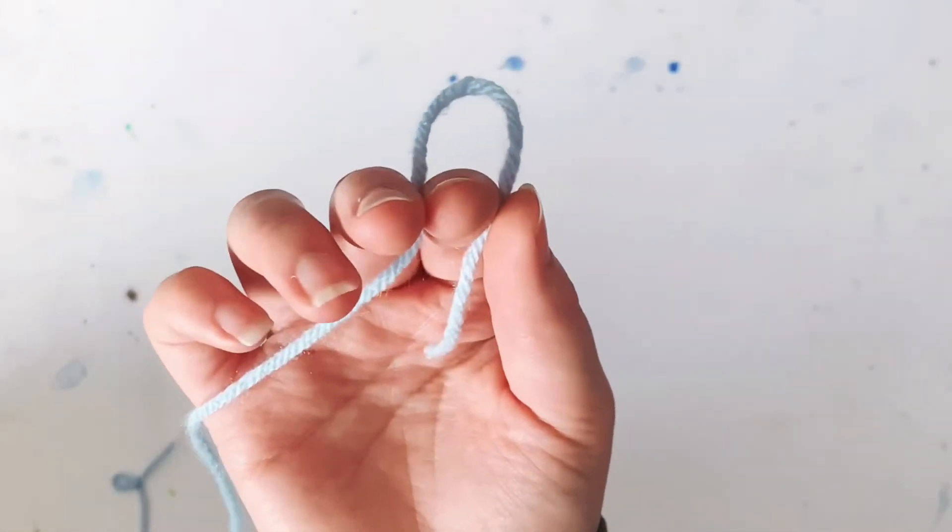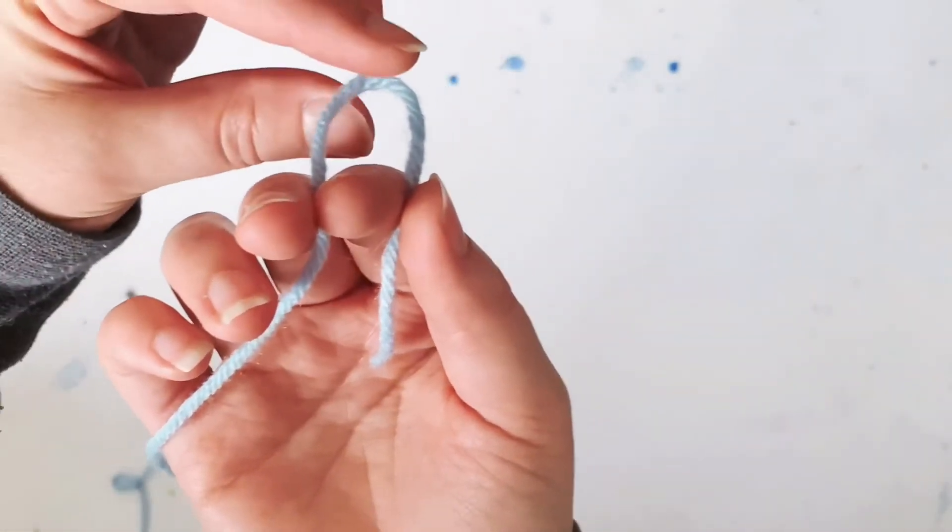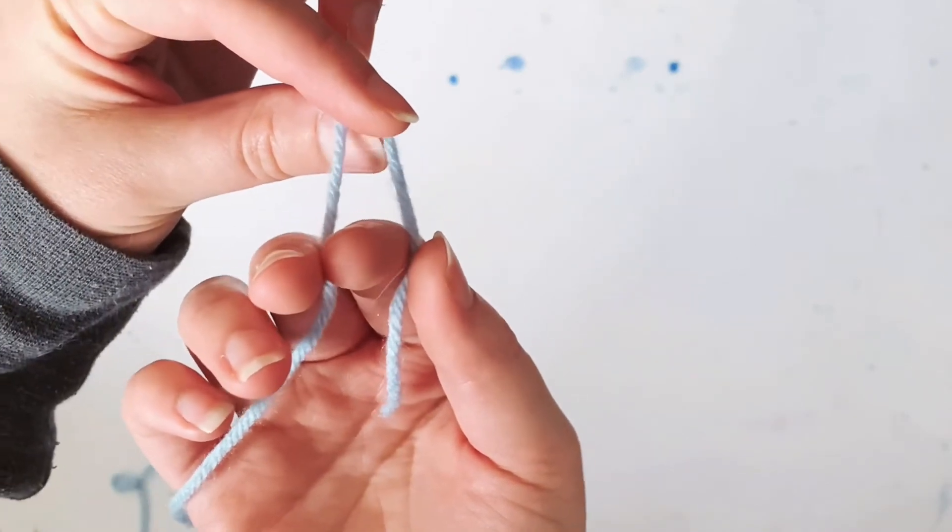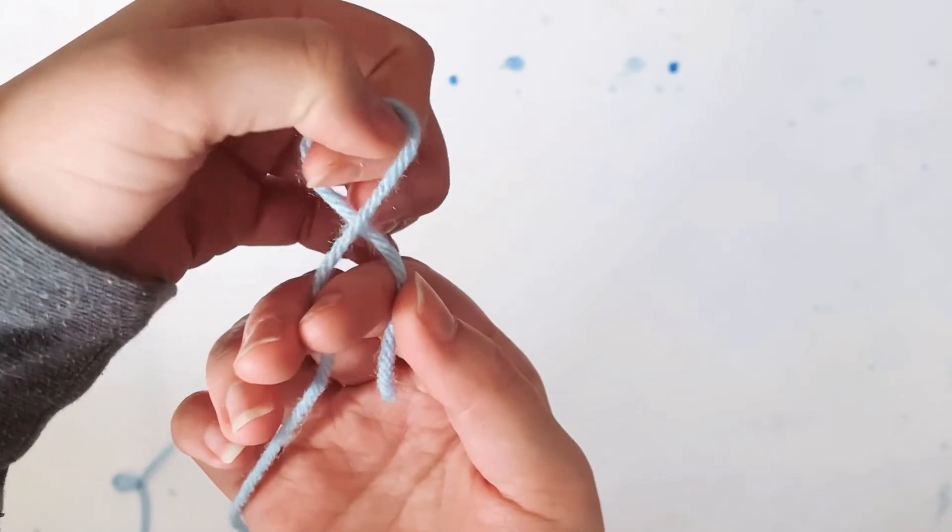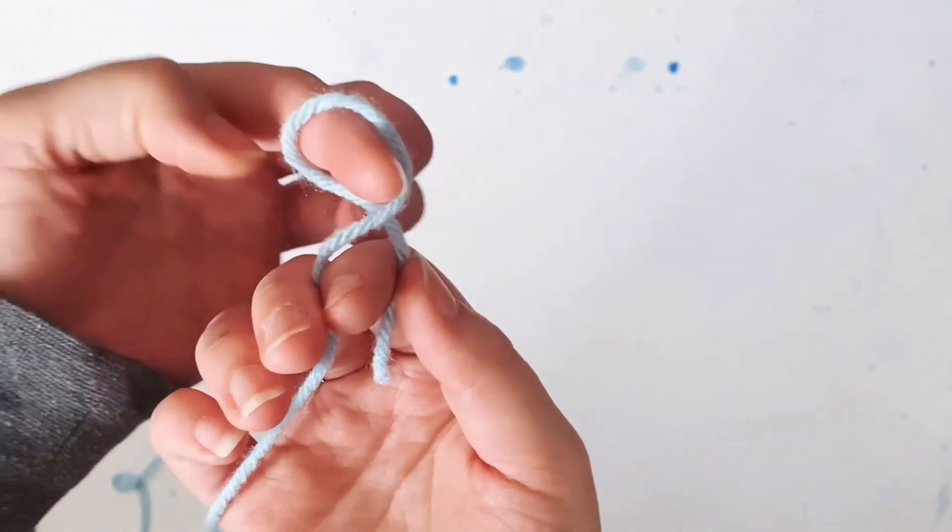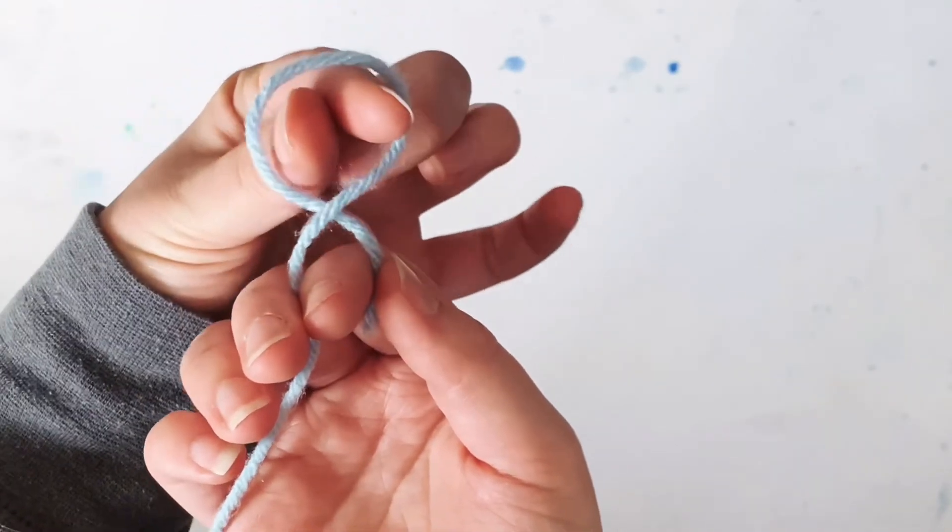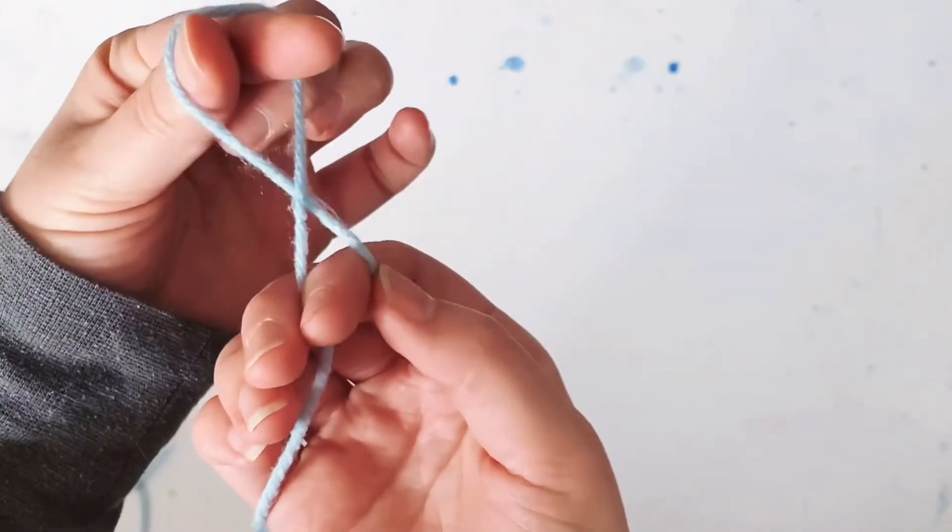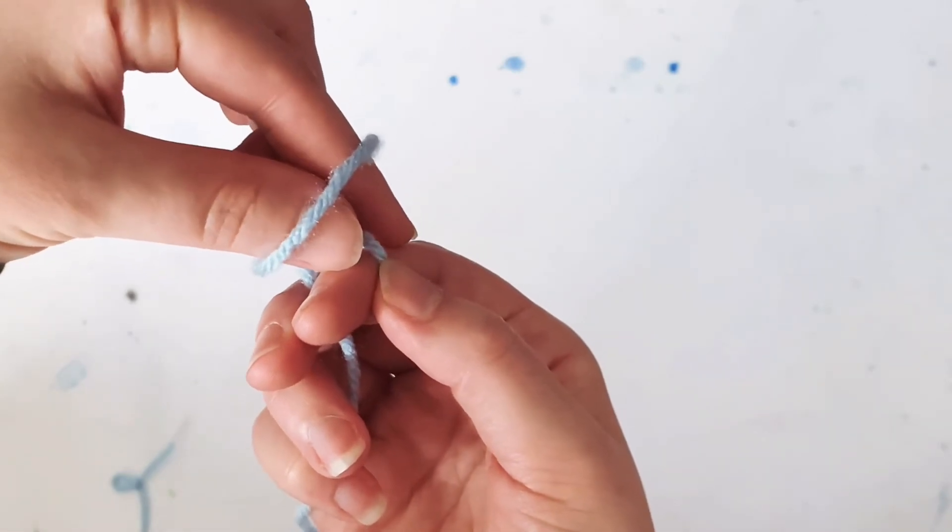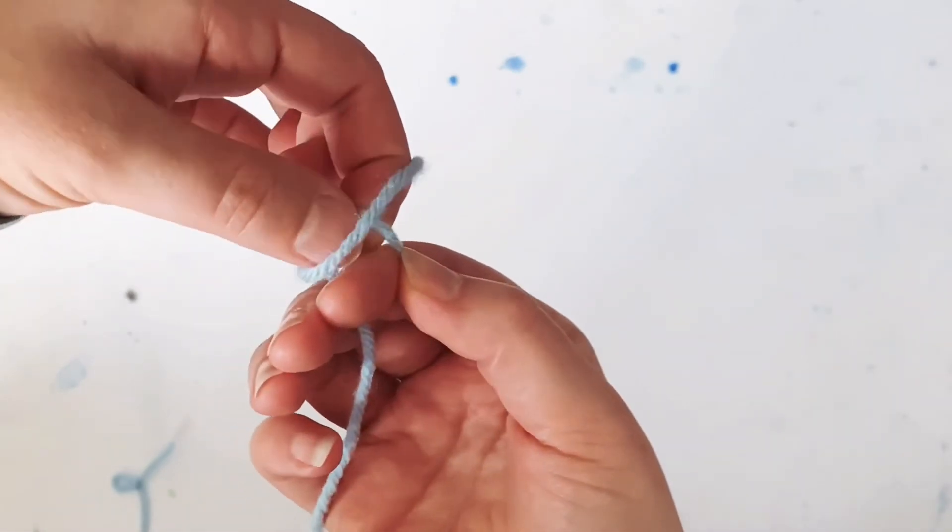While pinching your yarn, you're going to take your left hand, pull up, give yourself some space, and twist to the right. In that big loop, put your forefinger and thumb, reach in, and grab that little piece. Don't let go with your right hand.